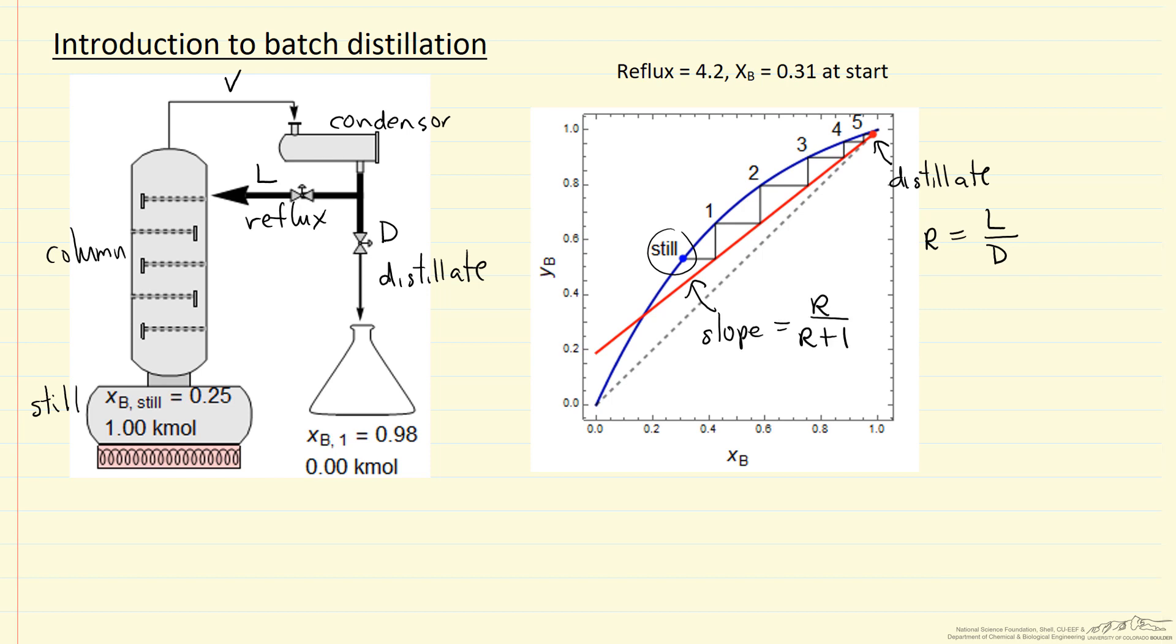So batch stills are used typically if we have smaller quantities that we want to separate. They are a lot more flexible, the same system can be used in sequence for different mixtures. It also allows each batch to be identified - what were the exact feed conditions, the conditions where we carried out, how long, et cetera.